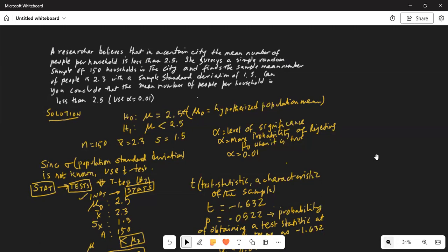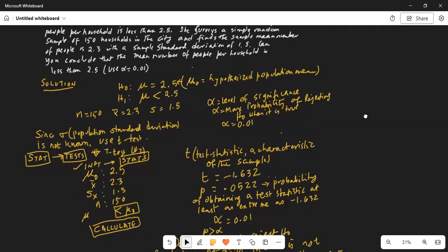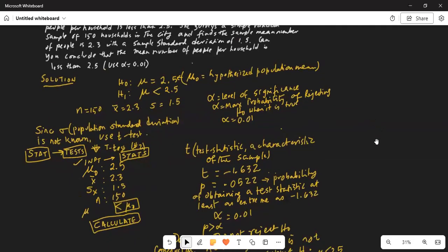The next thing we should realize is that population standard deviation is not known. Only sample standard deviation has been given to us. Therefore, we use t-test. We are going to use the t-test in the calculator. So, stat then highlight test in the top row and scroll down to t-test which is number 2. Input should be on stats because we know the summary stats of the sample. Our mu0 is the value in the null hypothesis which is 2.5. X bar is 2.3, Sx is 1.5, N is 150. And in the fifth line, we select the direction of the alternate which is less than mu0. And then we calculate.